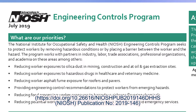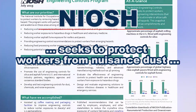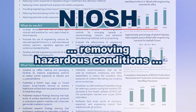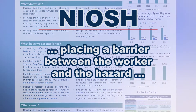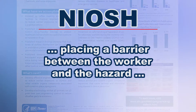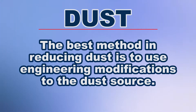The National Institute for Occupational Safety and Health's Engineering Control Program seeks to protect workers from nuisance dust by removing hazardous conditions or by placing a barrier between the worker and the hazard. The best method in dust reduction is to use engineering modifications to the dust source itself.